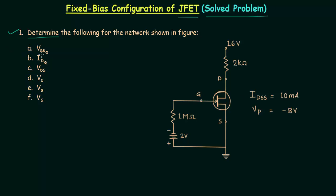In part A we have to find out voltage VGSQ, which is the input voltage and also the X coordinate of the operating point. The Y coordinate is the drain current IDQ. In part B we calculate IDQ. In part C we find out the output voltage VDS. In part D we find the potential at the drain. In part E we find VG, the potential of the gate, and in part F we find the potential at the source.